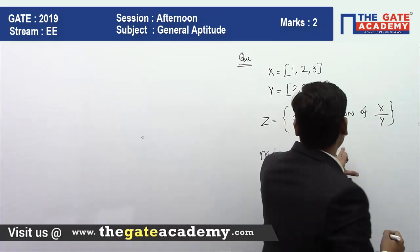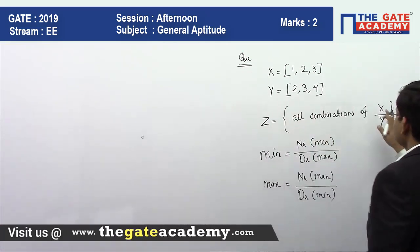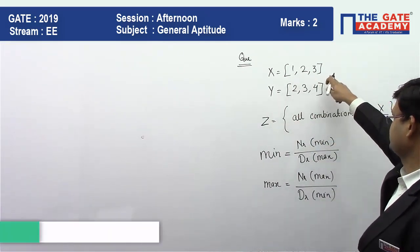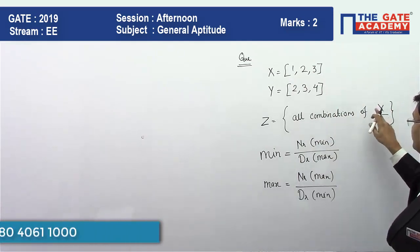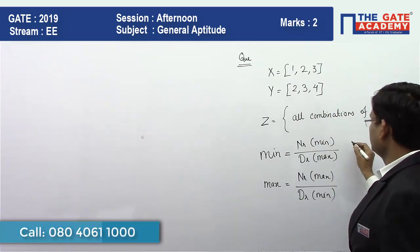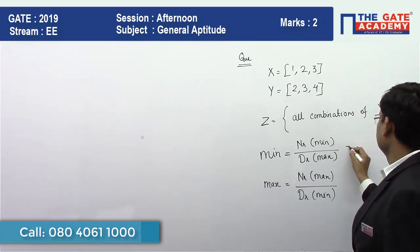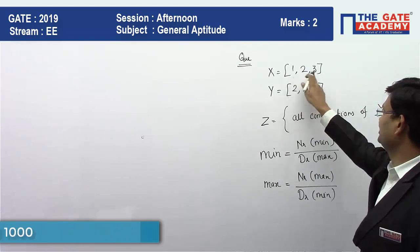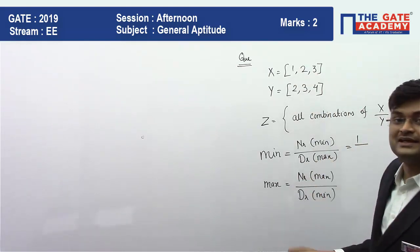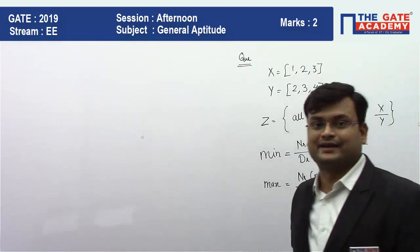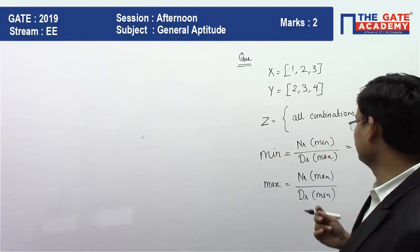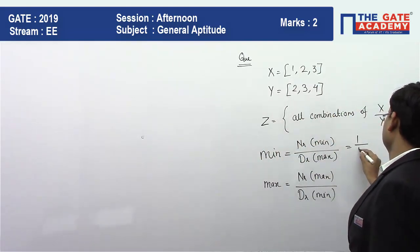The numerator belongs to x, so the minimum value of x is 1. The denominator belongs to y, so what is the maximum value of the denominator? Which is 4. So the minimum value of z is 1/4.